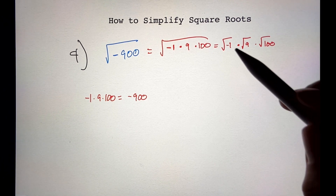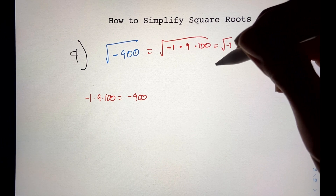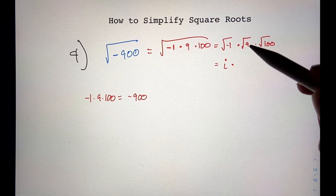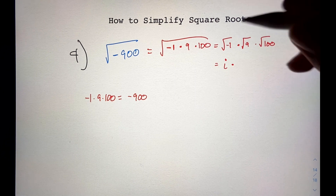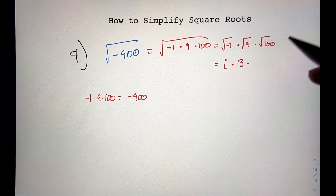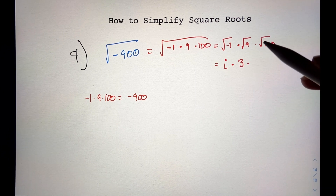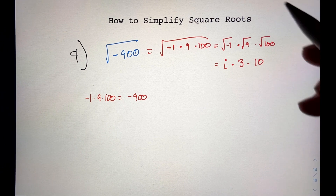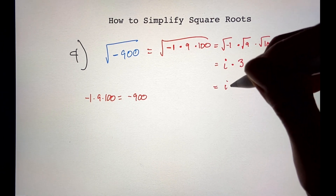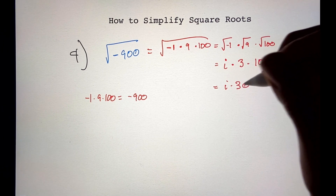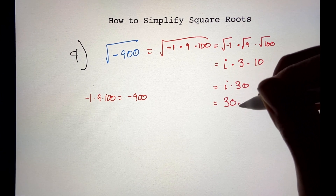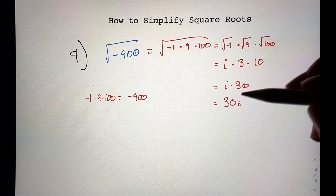The square root of negative 1 is just i. The square root of 9 is 3, since 9 is a perfect square. The square root of 100 is 10, since 100 is also a perfect square. So now we have i times 3 times 10. Multiplying 3 by 10 gives us i times 30, and writing 30 in front gives us 30i — that's our answer.